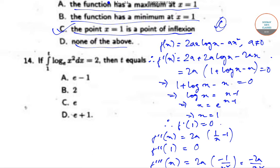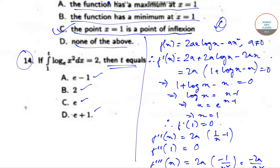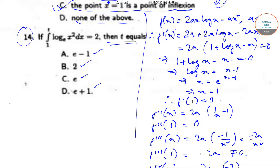Now we will solve question number 14. In question number 14, it is said that we need to find: if the integral from 1 to t of log(x²) base e dx equals 2, then find the value of t. The options are e − 1, 2e, and e + 1.